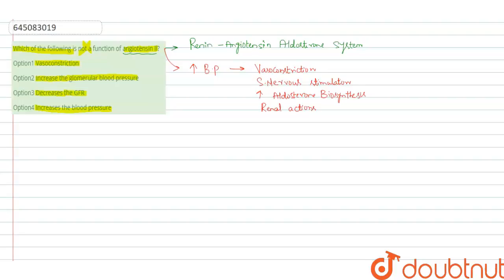Angiotensin 2 acts on the proximal convoluted tubule of the kidney by increasing Na-H exchange and also increases sodium reabsorption.